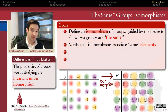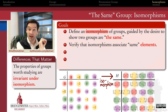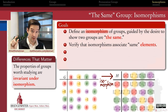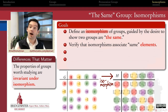We know now that isomorphisms associate to elements of one group, elements of another group, that have all the same properties on an element level. They associate the identity element to the identity element, powers of elements to powers of elements, inverses to inverses, commuting elements to commuting elements, generators to generators. The order of elements is preserved under an isomorphism. All of those properties that we want to be true element to element are true under an isomorphism.